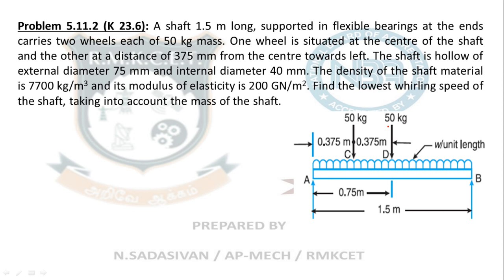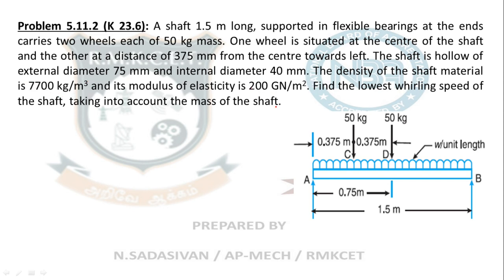The shaft is hollow, with external diameter 75 mm and internal diameter 40 mm, so you have two diameters. Density of the shaft material is 7700 kg/m³. The dead weight of the beam is considered — it is not neglected. Young's modulus is 200 GN/m². Find the lowest whirling speed of the shaft, taking into account the mass of the shaft.